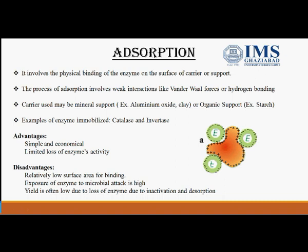Adsorption involves the physical binding of the enzyme on the surface of the support or carrier. The process involves weak interactions like van der Waals forces, hydrogen bonding, and ionic interactions. There is just a surface binding of the enzyme — the enzyme is shown in green and the matrix carrier in orange. These bonds are not permanent, so the enzyme or product can be easily detached from the surface. Carriers used may be mineral supports such as aluminum oxides, or organic supports such as starch. The first enzyme immobilized by this technique was invertase, by Nielsen and Griffith in 1916.